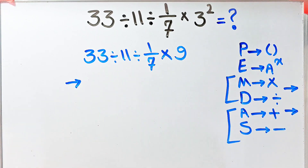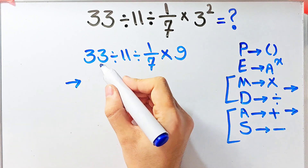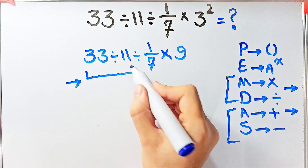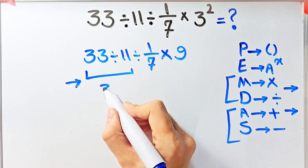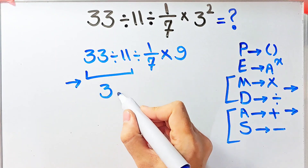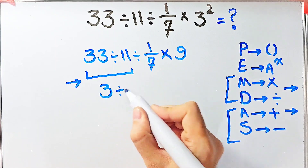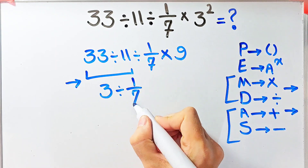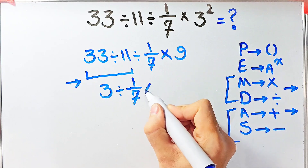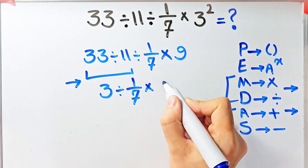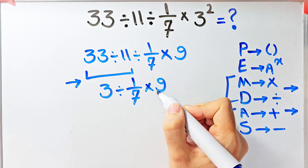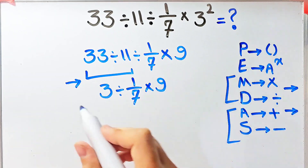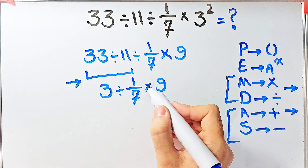Because division and multiplication have the same level of priority, we start from the left. 33 divided by 11 equals 3. Now we have 3 divided by 1 over 7, then times 9. Again we have multiplication and division, so we start from the left and simplify the question.